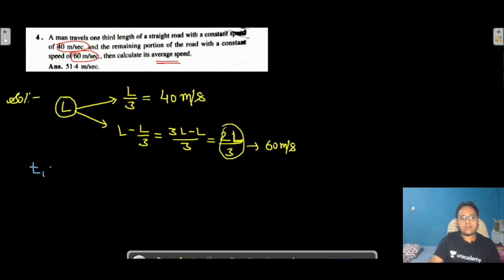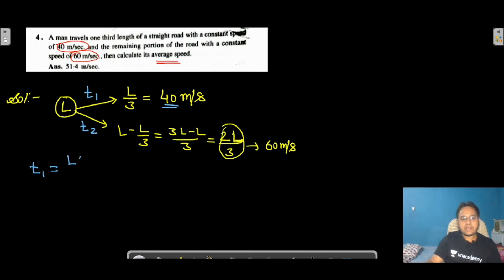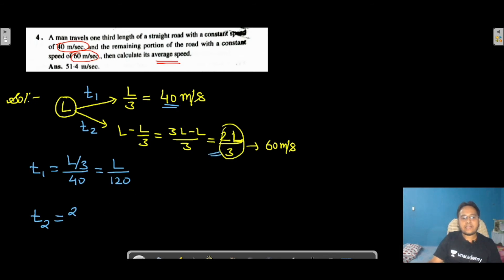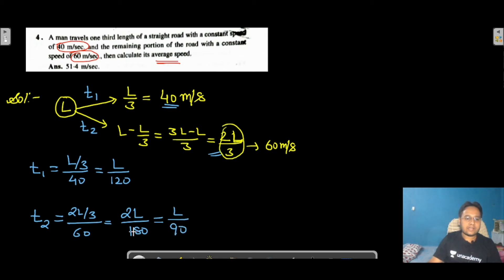Let T1 be the time for the first part: distance = L/3, speed = 40, so T1 = (L/3)/40 = L/120. For T2: distance = 2L/3, speed = 60, so T2 = (2L/3)/60 = 2L/180 = L/90. Now we have T1 = L/120 and T2 = L/90.